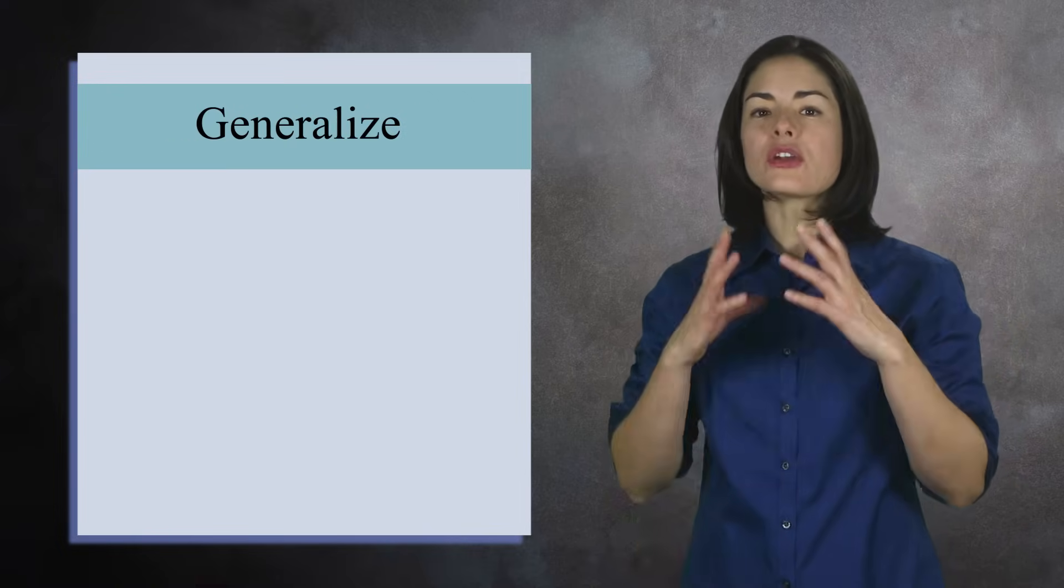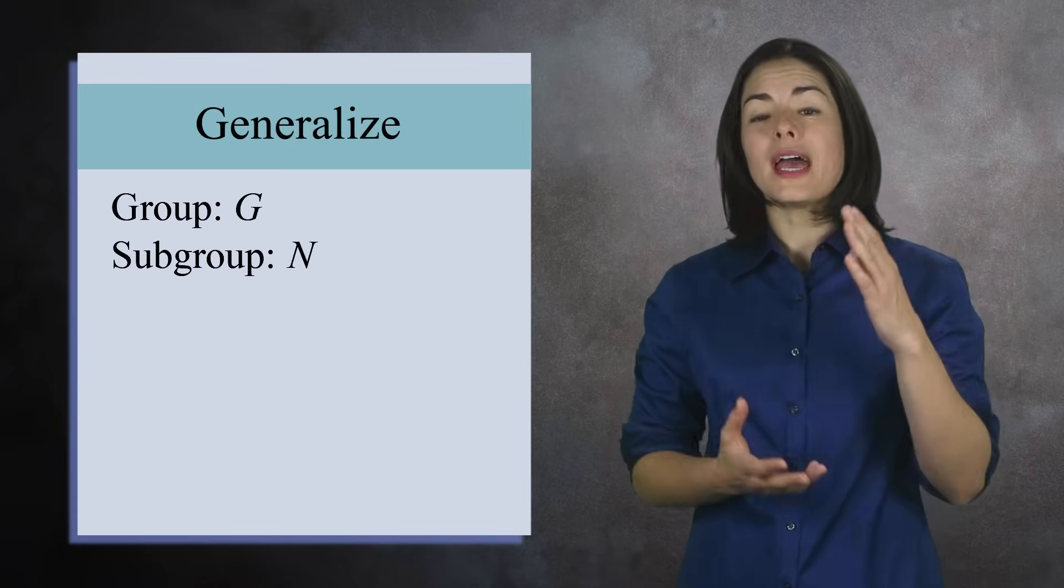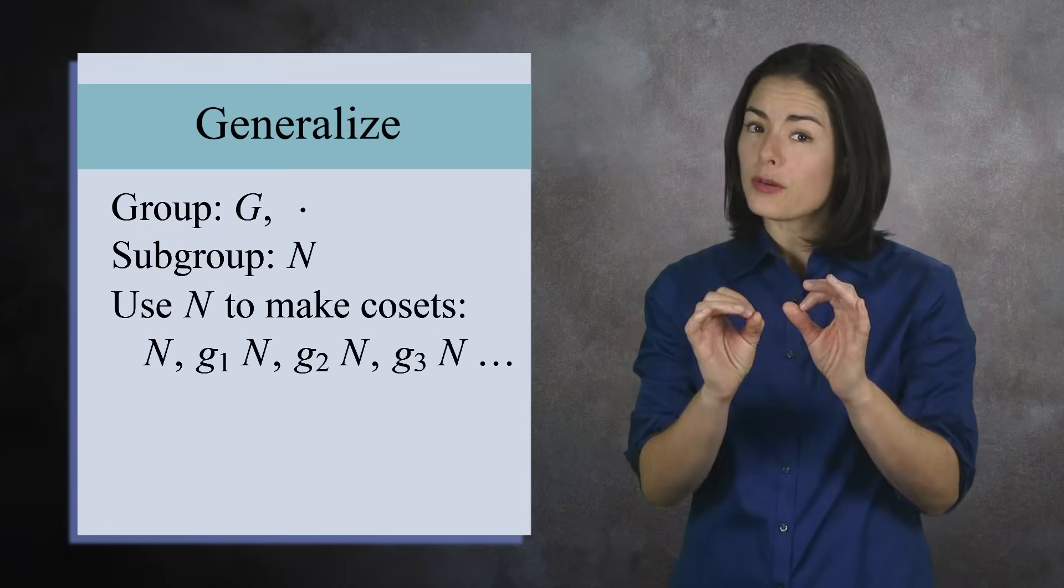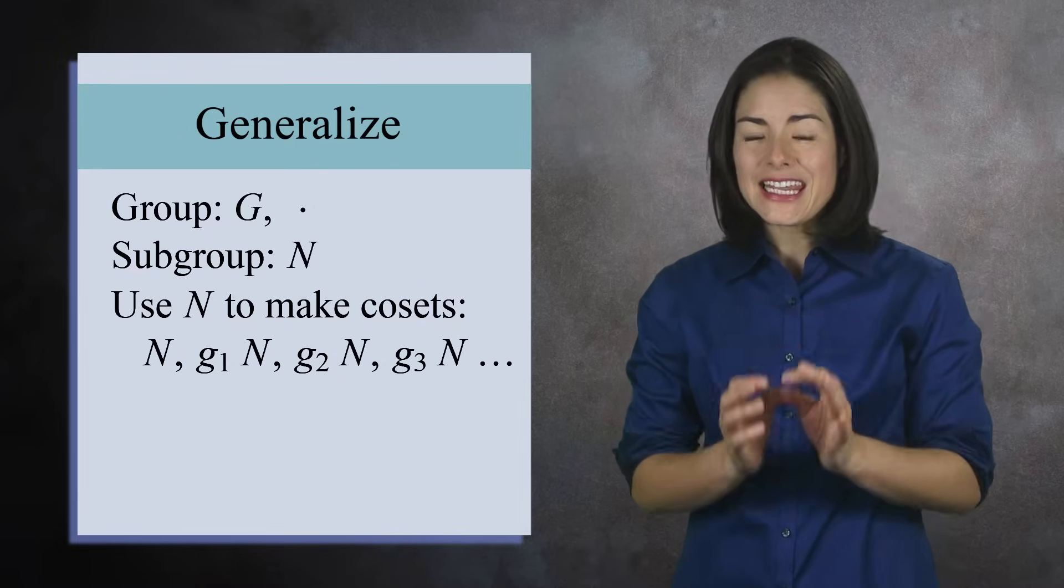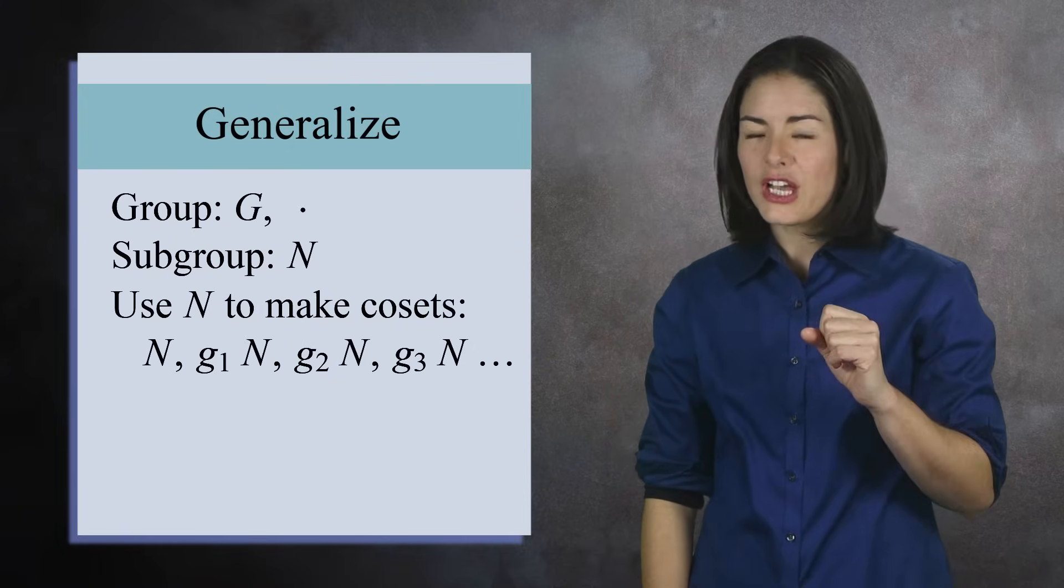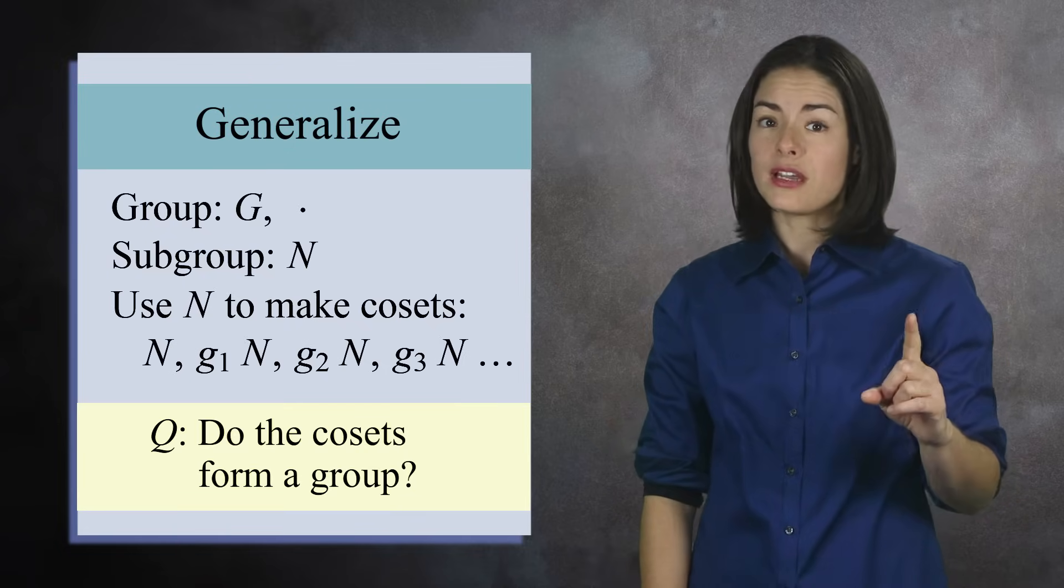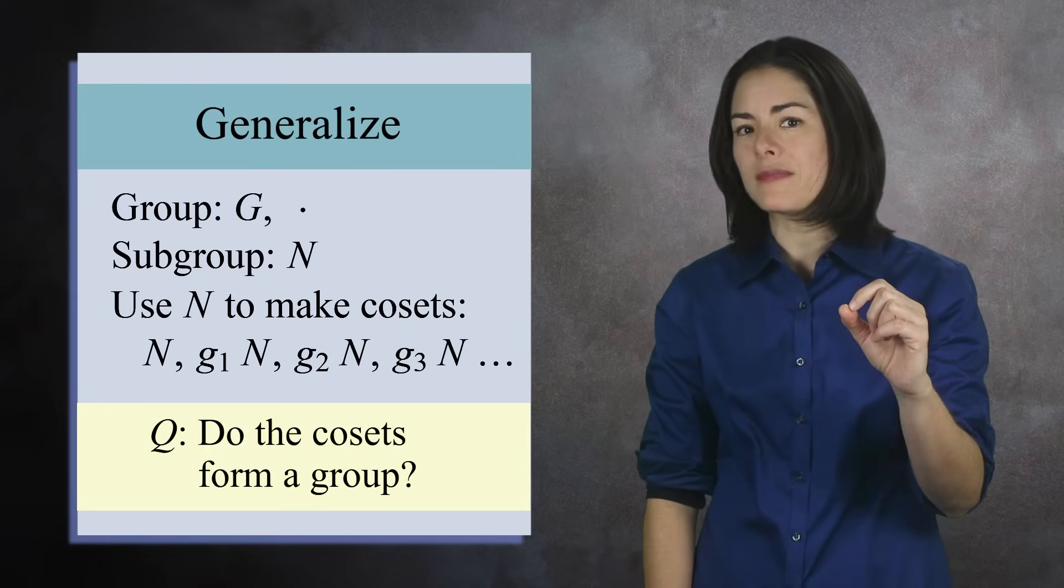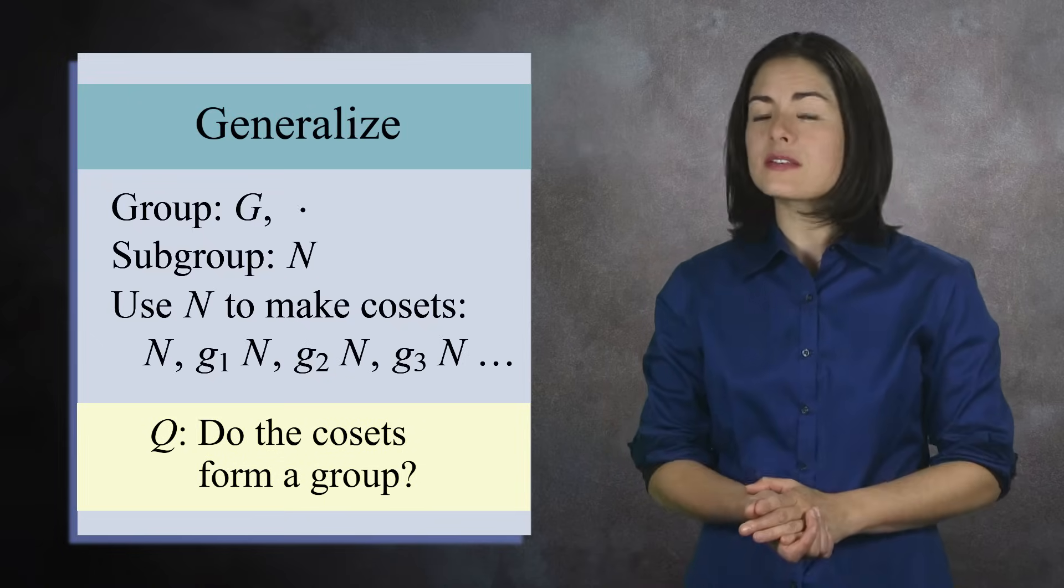Let's now begin the process of generalizing this technique to an arbitrary group. Suppose we have a group G and a subgroup N. Here we will use multiplicative notation for the group G. Like before, we can use N to generate a collection of non-overlapping cosets. Remember, N is a subgroup, while the other cosets are simply sets. Here is the big question. Do the cosets always form a group? The answer is no. If the cosets do not form a group, we do not call N a normal subgroup, and we cannot make a quotient group.